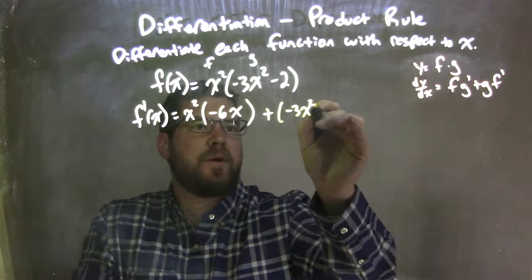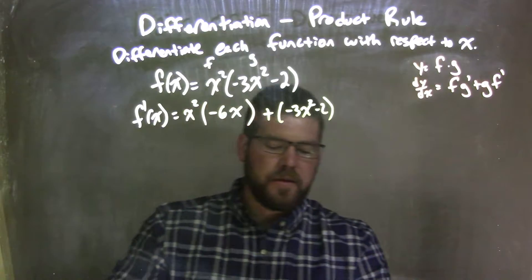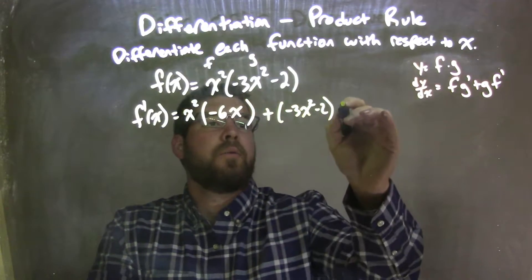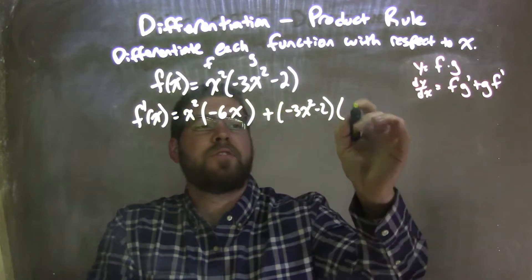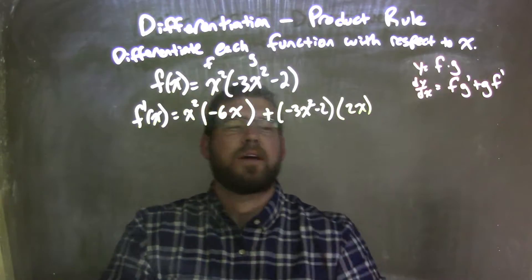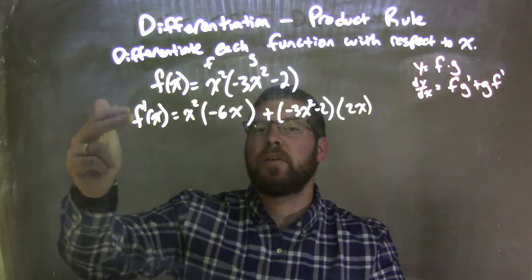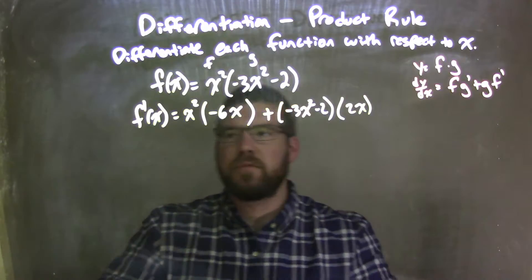what's in the parentheses? Negative 3x squared minus 2 times the derivative of the first part, which is the derivative of f is 2x, because f was x squared. Now at this point, we've taken the derivative,